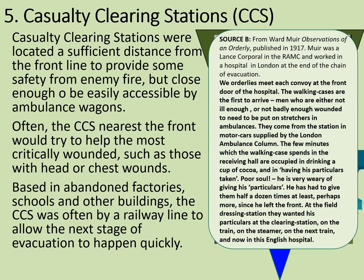Source B is from Ward Muir, 'Observations of an Orderly', published in 1917. Muir was a lance corporal in the Royal Army Medical Corps working in a hospital in London at the end of the chain. He writes: 'We orderlies meet each convoy at the front door of the hospital. Many are not badly wounded enough to need stretchers. They come from the station in motor cars. The few minutes spent in the receiving hall are occupied in drinking a cup of cocoa and having particulars taken. Poor soul — he is very weary of giving his particulars, having given them at the front, at the field dressing station, at the clearing station, on the train, on the steamer, on the next train, and now at this English hospital.'